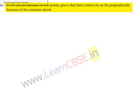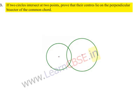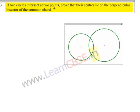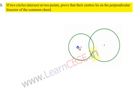Moving on to the solution, let us consider two circles as shown in the figure. Let the centers be O and O'. They intersect at the common points A and B, and AB will be their common chord. We need to prove that OO' is perpendicular to AB. Let us assume that OO' intersects AB at M, and AM is equal to MB.